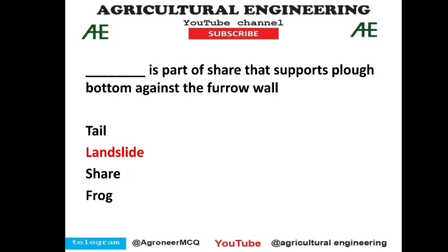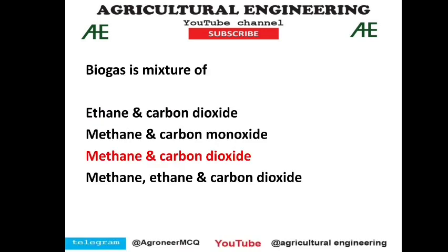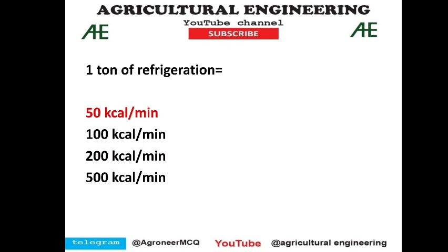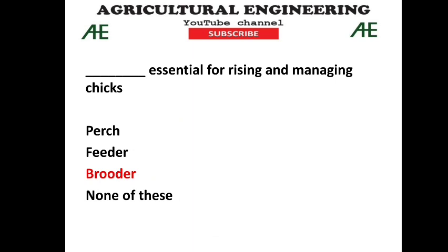The part of the share that supports the plough bottom against the furrow wall is called the landside. The size of MB plough is expressed in width of cut. Biogas is a mixture of methane and carbon dioxide — methane is the major product and CO2 is the subsidiary product, with some minor gases also produced. One ton of refrigeration is 50 calories per minute. Janta biogas is a fixed dome type biogas — option 1 is correct.